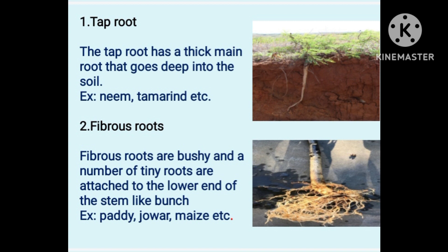The tap root has a thick main root that goes deep into the soil, and several thin roots grow from the main root. Examples include neem, tamarind, and mango trees.